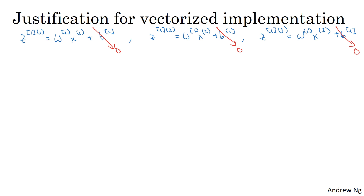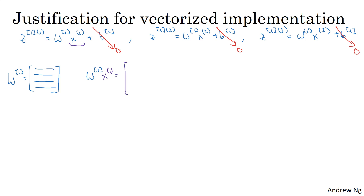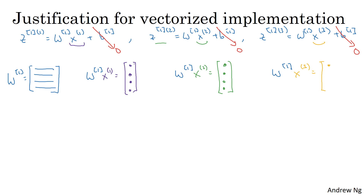W1 is going to be some matrix with some number of rows. If you look at W1 times X1, you get some column vector — that's Z11. W1 times X2 gives some other column vector — that's Z12. And W1 times X3 gives you some third column vector — that's Z13.